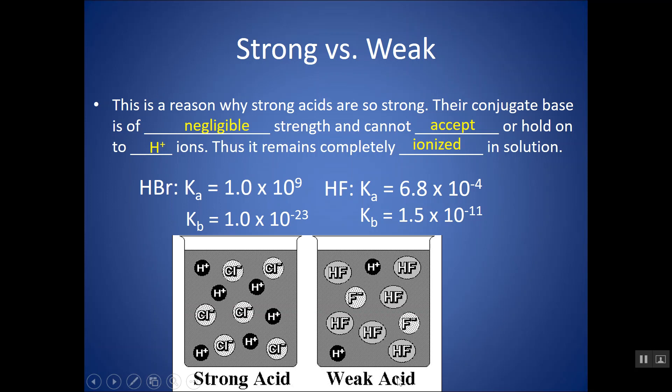Whereas HF, which is a weak acid, it can go in the opposite direction, H plus and F minus. The F minus can pick up that H plus and turn back into HF, and that's why a lot of it remains unionized.